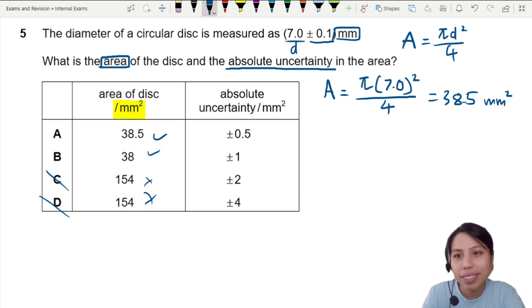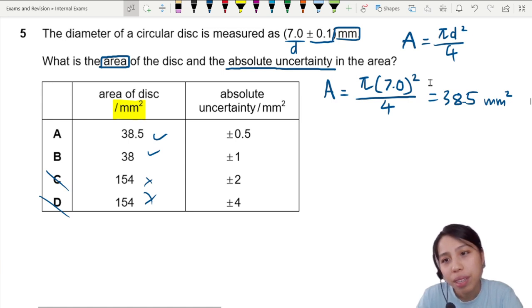Now comes the uncertainty. Here's one problem. We cannot just deal with the 0.1 and do all kinds of calculation here. Because this 0.1 is in millimeter, but area is in millimeter square. It's a different unit. You cannot just use this.